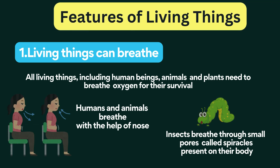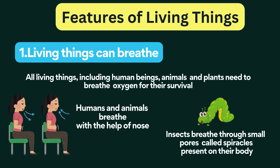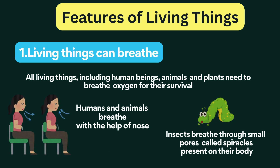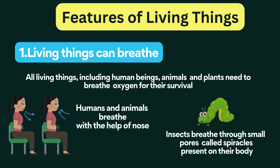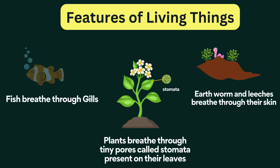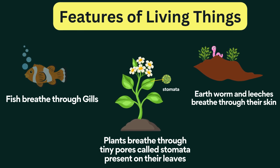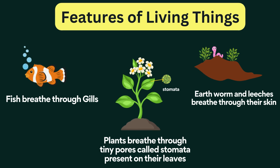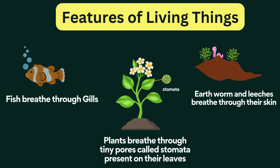Living things can breathe. All living things, including human beings, animals, and plants, need to breathe oxygen for their survival. Humans and animals breathe with the help of their nose. Insects breathe through small pores called spiracles present on their body. Fish and some other animals that live in water use gills to breathe. Plants breathe through tiny pores called stomata present on their leaves. Earthworms and leeches breathe through their skin.